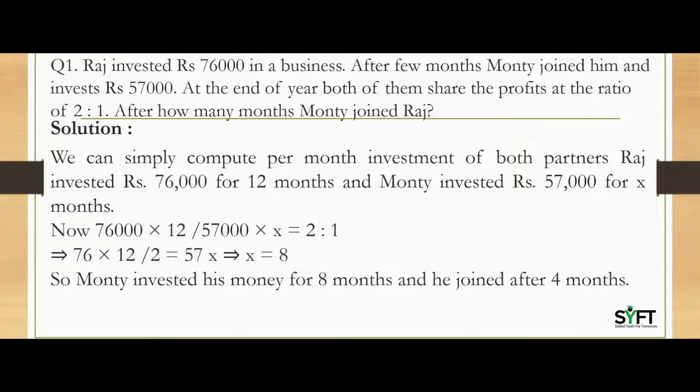So we have one equation here: Rs.76,000 into 12 by Rs.57,000 into X is equal to 2 by 1. By this equation we can find out the value of X. So here X will come 8. So Monty invested his money for 8 months and he joined Raj after 4 months.